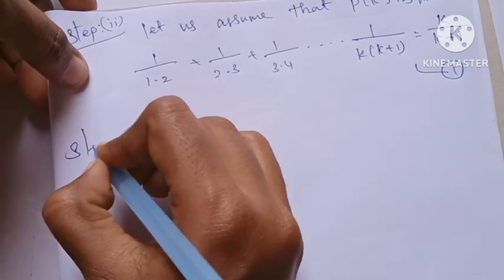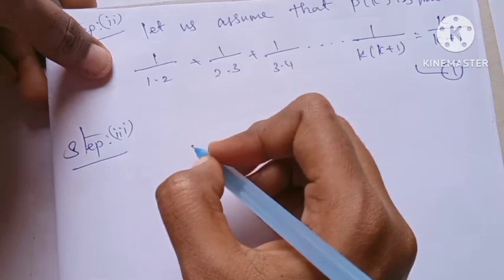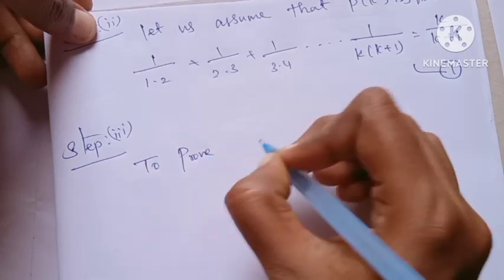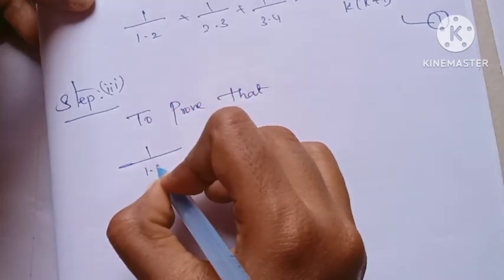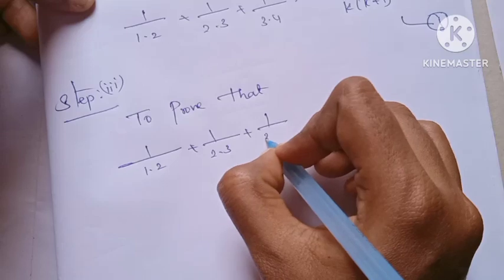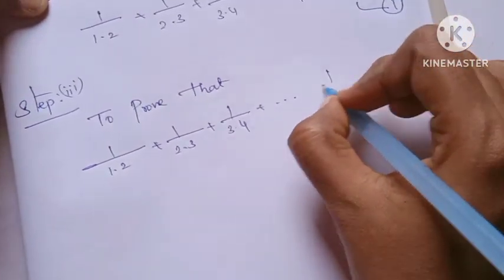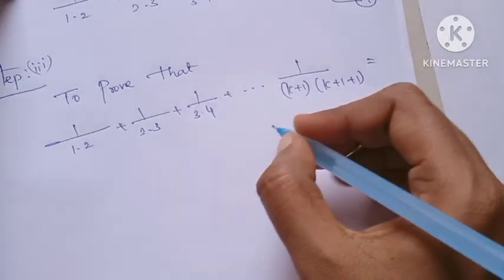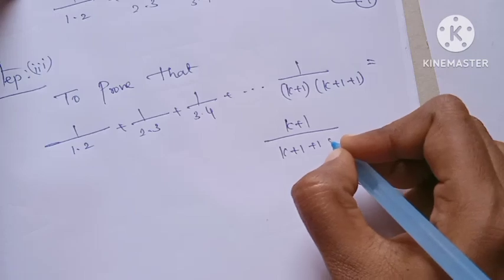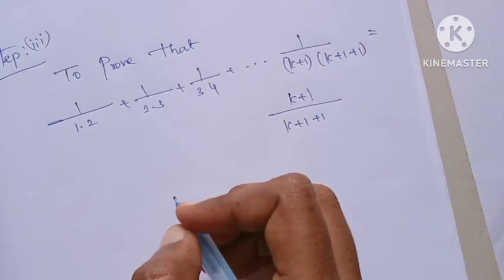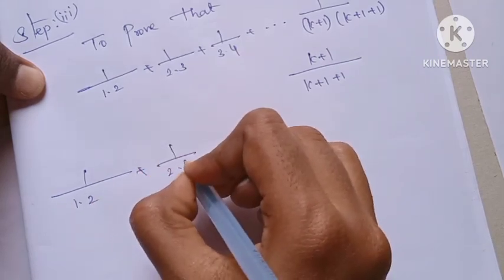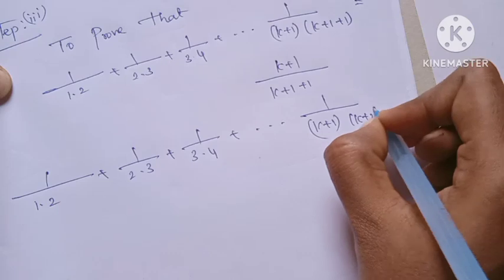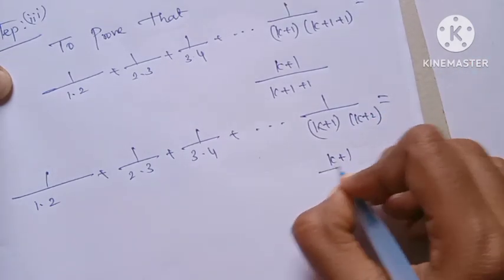Step 3: We need to prove that P(k+1) is true. That is, 1 by 1.2 plus 1 by 2.3 plus 1 by 3.4, up to 1 by k plus 1 into k plus 1 plus 1, is equal to k plus 1 by k plus 1 plus 1. Simply, I will prove that 1 by 1.2 plus 1 by 2.3 plus 1 by 3.4, up to 1 by k plus 1 into k plus 2, is equal to k plus 1 by k plus 2.